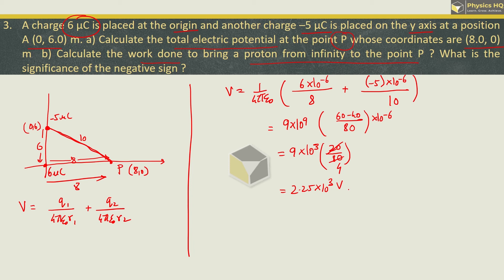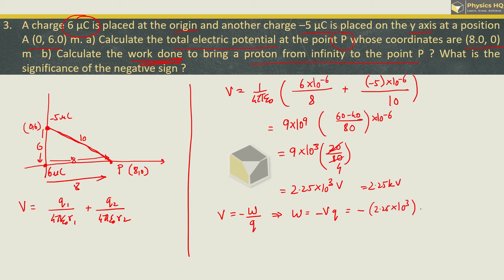So the potential is 2.25 kilovolt. Now the second part: calculate the work done to bring a proton from infinity to point P. The potential is related to work done to bring a charge from infinity to a point. Work done equals minus V into Q, so minus 2.25 into 10 raised to 3, multiplied by the charge of a proton which is 1.6 into 10 raised to minus 19. Solving this, we get minus 3.6 into 10 raised to minus 16 joule.